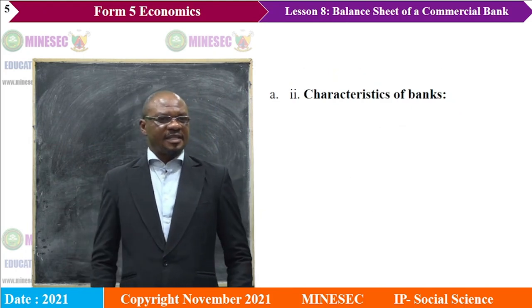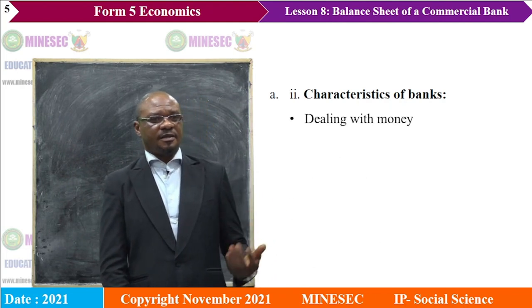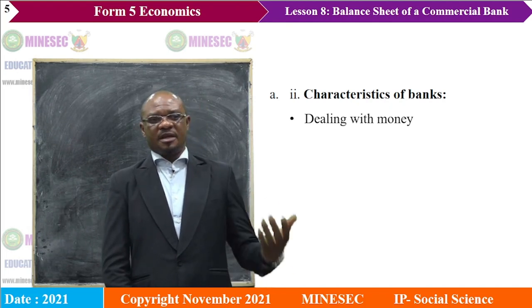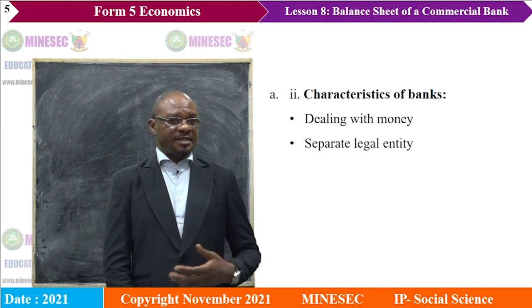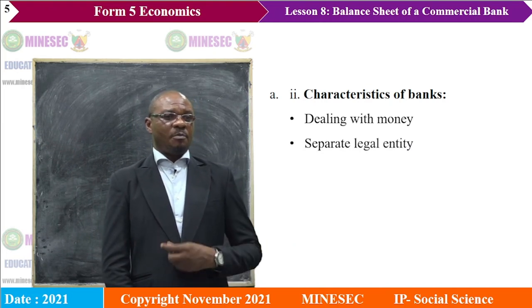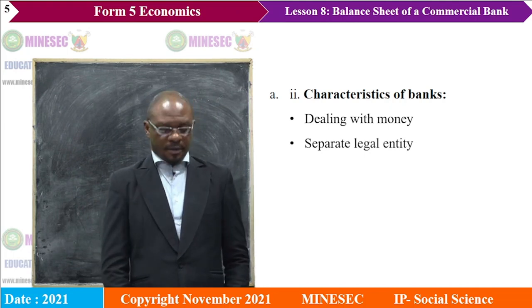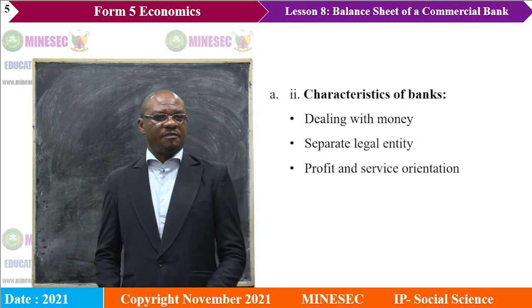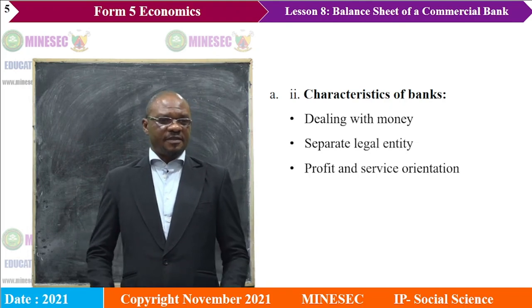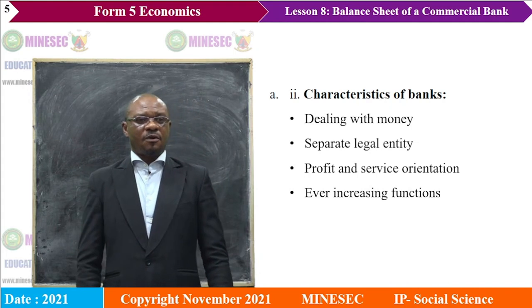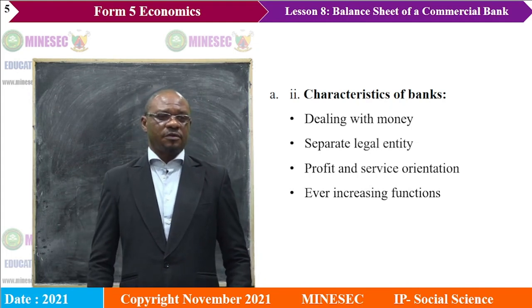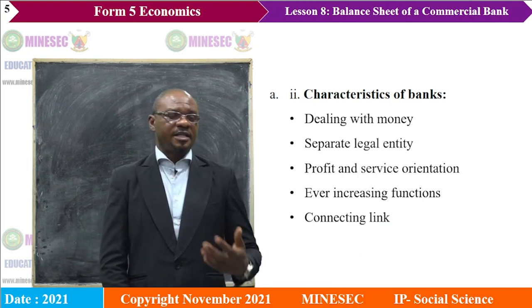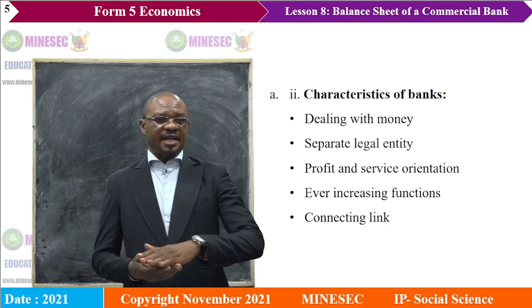For Part A, the characteristics of banks: first, they deal with money — accepting deposits, granting loans, making payments, and so on. Second, banks are separate legal entities, meaning they exist with a certificate of incorporation. Third, banks are profit- and service-oriented; their goal is to make profit from the quality of financial services they provide. And finally, they have forever-increasing functions — their functions keep expanding, and they serve as a connecting link as financial intermediaries.